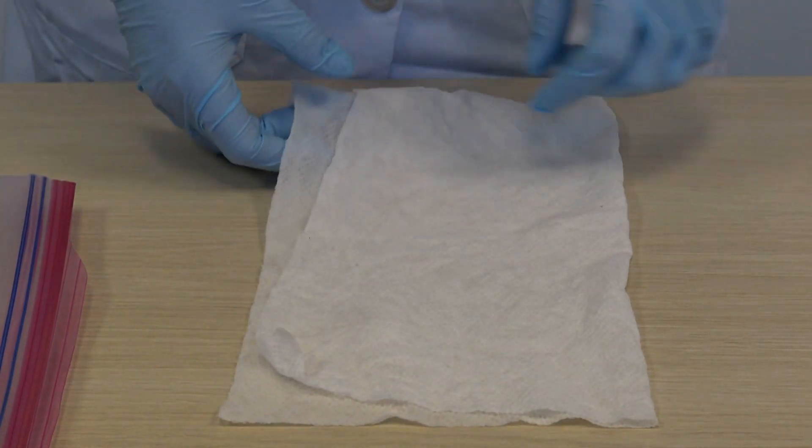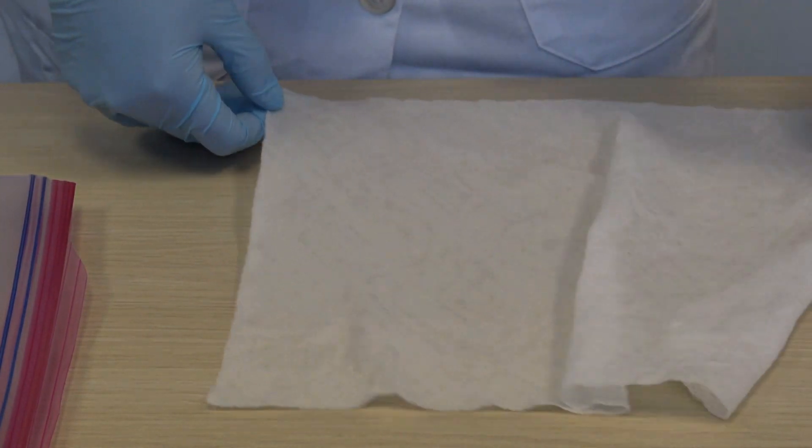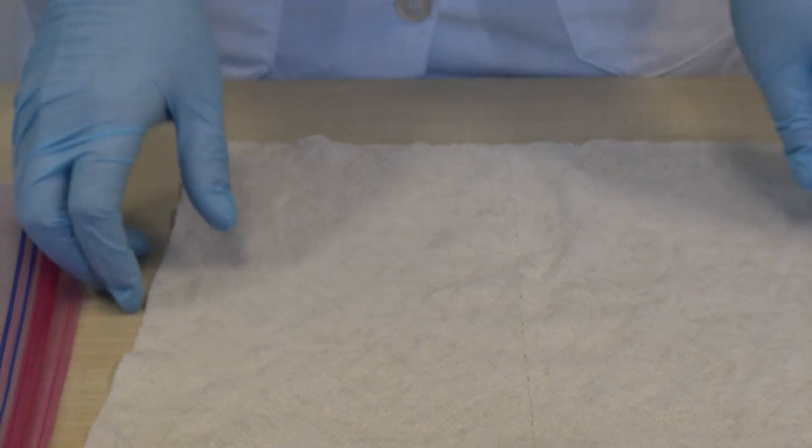After your bean seeds have been soaking for about 20 to 24 hours, take a damp paper towel—not soaking wet and not dry.